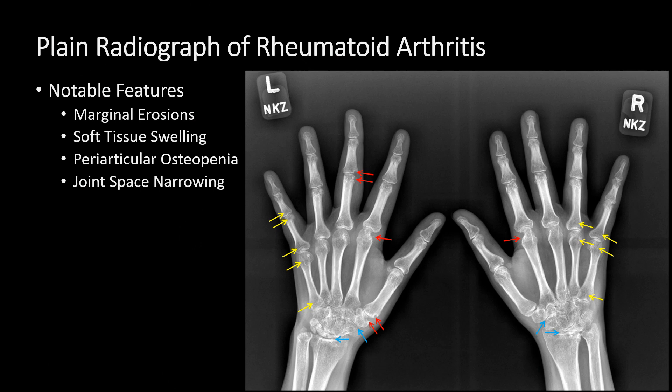Some notable features include marginal erosions, which are seen here with the red arrows. They look like little bites out of the bone on either side of the joints. Soft tissue swelling is also present — this patient has clear areas of mild soft tissue swelling surrounding the joints, particularly the MCP joints. The yellow arrows represent periarticular osteopenia.